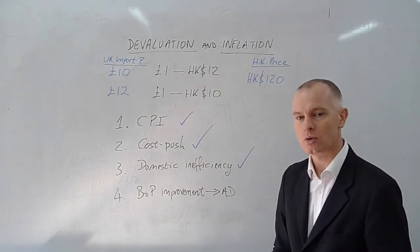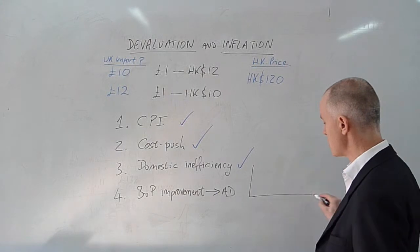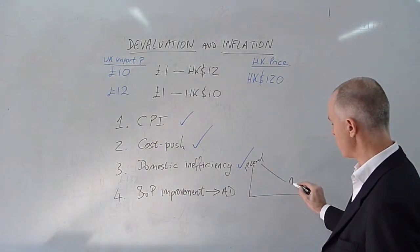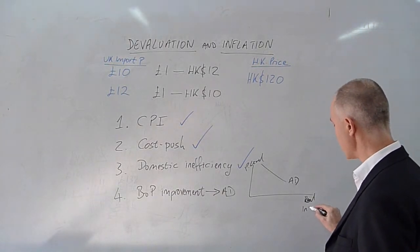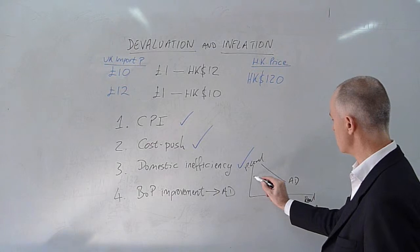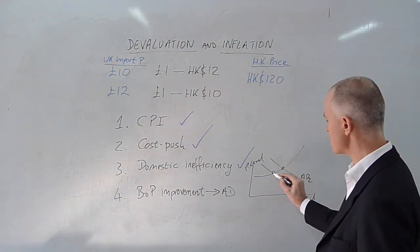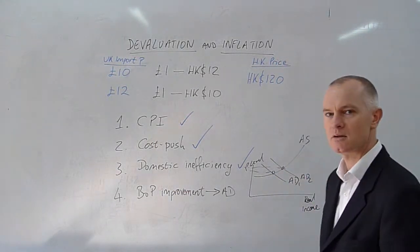Whether this aggregate demand increase leads to an increase in price level depends upon the gradient of the aggregate supply curve. And so, the increase in AD will be cost inflationary if the aggregate supply curve is not that flat.